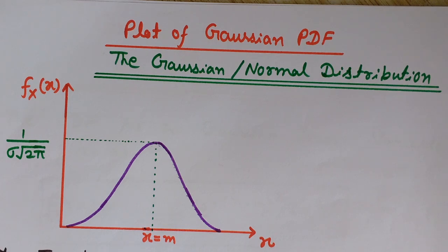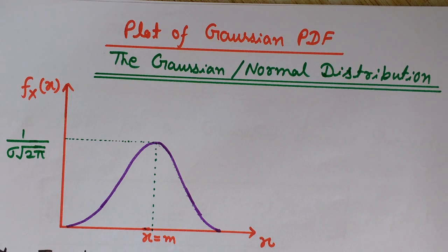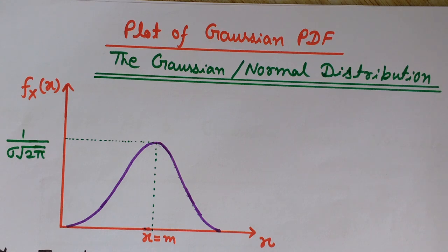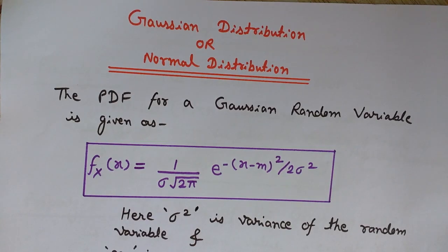Another example is random errors in measurements, which create the measured values having a Gaussian distribution about the true value. Whenever we measure some values, there is a true or exact value for that measurement. While performing experiments, we will not get the exact value — instead we get a large set of random values about that true value, and these random errors create a Gaussian distribution.